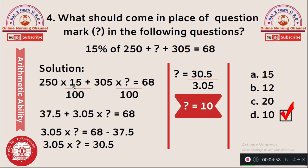Calculating: 250 × 15/100 = 37.5, and 305/100 = 3.05. So: 37.5 + 3.05 × ? = 68. Therefore 3.05 × ? = 68 − 37.5 = 30.5. Bringing 3.05 to the right-hand side: ? = 30.5 ÷ 3.05 = 10. Option D, 10, is the right answer.